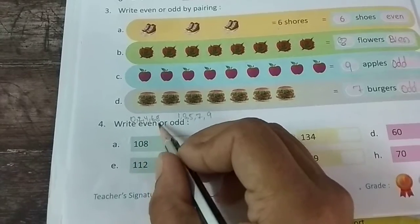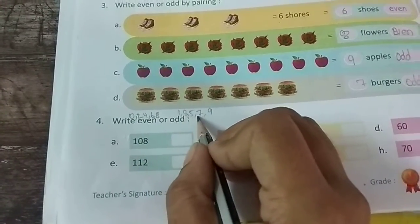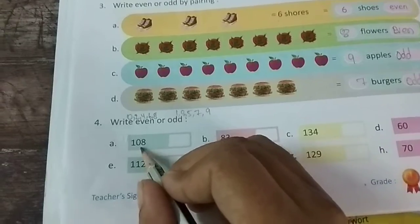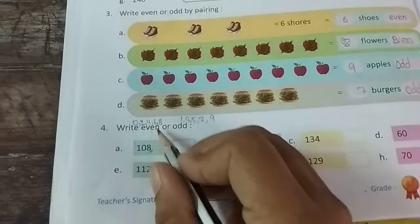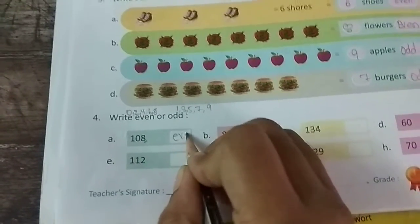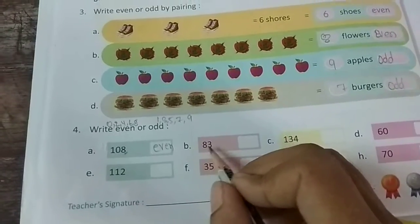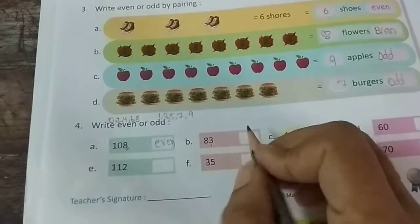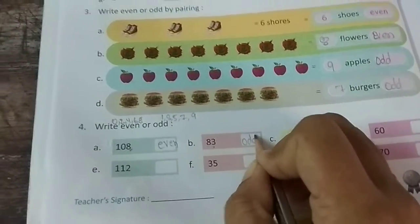The last digit. Zero, two, four, six, eight, so we can write even. And the last one is one, three, five, seven, nine, so we can write odd. This is odd and even.